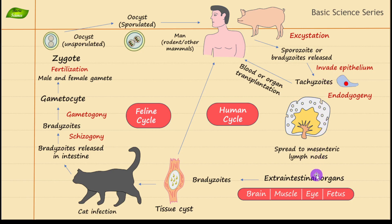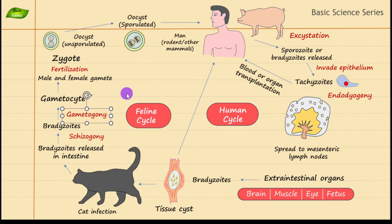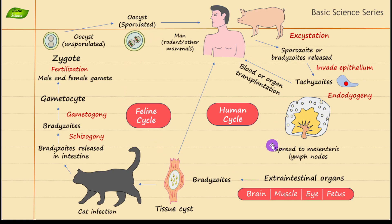To summarize: we started from the sporulated oocyst, which can enter various hosts — rodents, mammals, humans — as intermediate hosts. Excystation happens, followed by invasion of the intestinal epithelium and conversion into tachyzoites. Tachyzoites can infect humans via blood transfusion or organ transplantation, then transfer to lymph nodes, and on to extra-intestinal organs including brain, muscle, eye, and fetus.